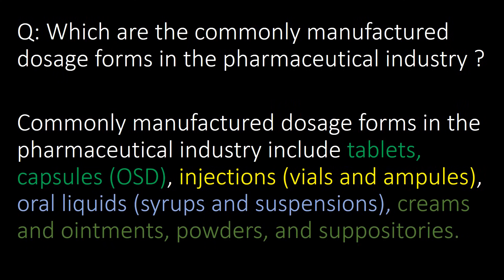Which are the commonly manufactured dosage forms in the pharmaceutical industry? Commonly manufactured dosage forms in the pharma industry include tablets and capsules, which are oral solid dosage forms, injections which include vials and ampoules, oral liquids which include syrups and suspensions, creams and ointments, powders, and suppositories.